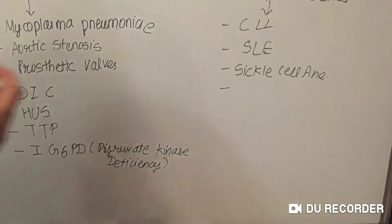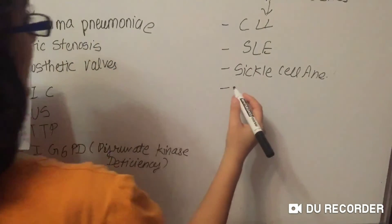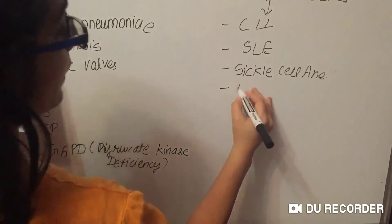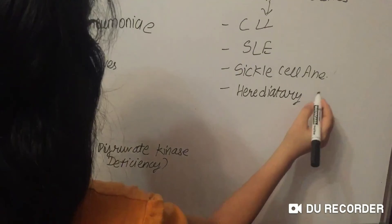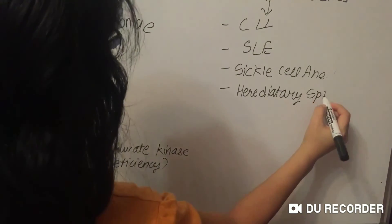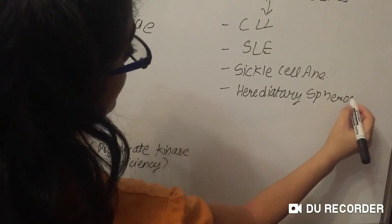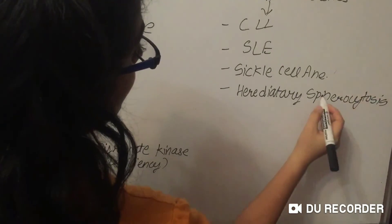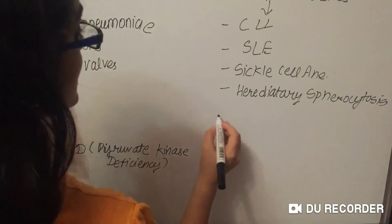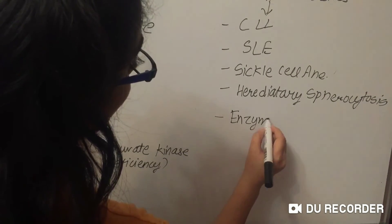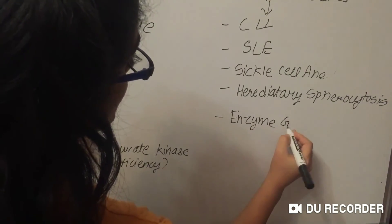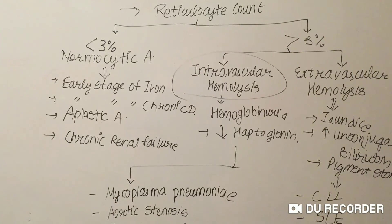Extravascular hemolysis occurs in hereditary spherocytosis and also in enzyme deficiency G6PD. I hope it was helpful for you. Thank you for watching my video.